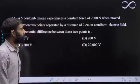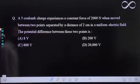Hello students, let's look at this question. A 5 coulomb charge experiences a constant force of 2000 newton when moved between two points separated by a distance of two centimeter in a uniform electric field. The potential difference between these two points...